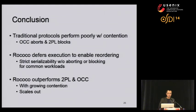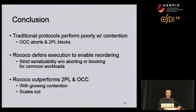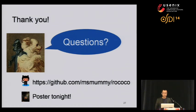In conclusion, we have seen that conventional protocols perform poorly with contention increasing in the system. Rococo uses dependency tracking and reordering to reorder transactions into a strictly serializable order without aborting or blocking. This makes Rococo outperform with growing contentions and in complex scaling workloads. Thank you all for listening. Our poster session is tonight — you are very welcome to drop by, and you can also check our code on GitHub.